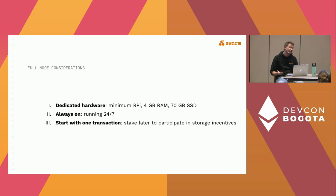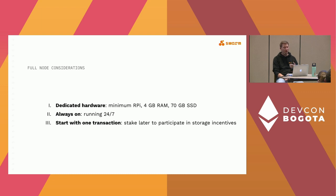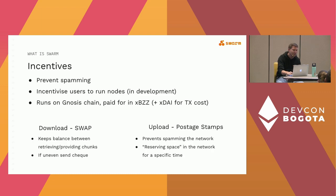For the full node, we recommend at minimum a Raspberry Pi with 4GB RAM, 70GB of SSD disk space — it's quite demanding on the disk. It has to run 24/7. You need to do one transaction to participate as a full node: deploy a checkbook contract to participate in what we call the bandwidth incentives.